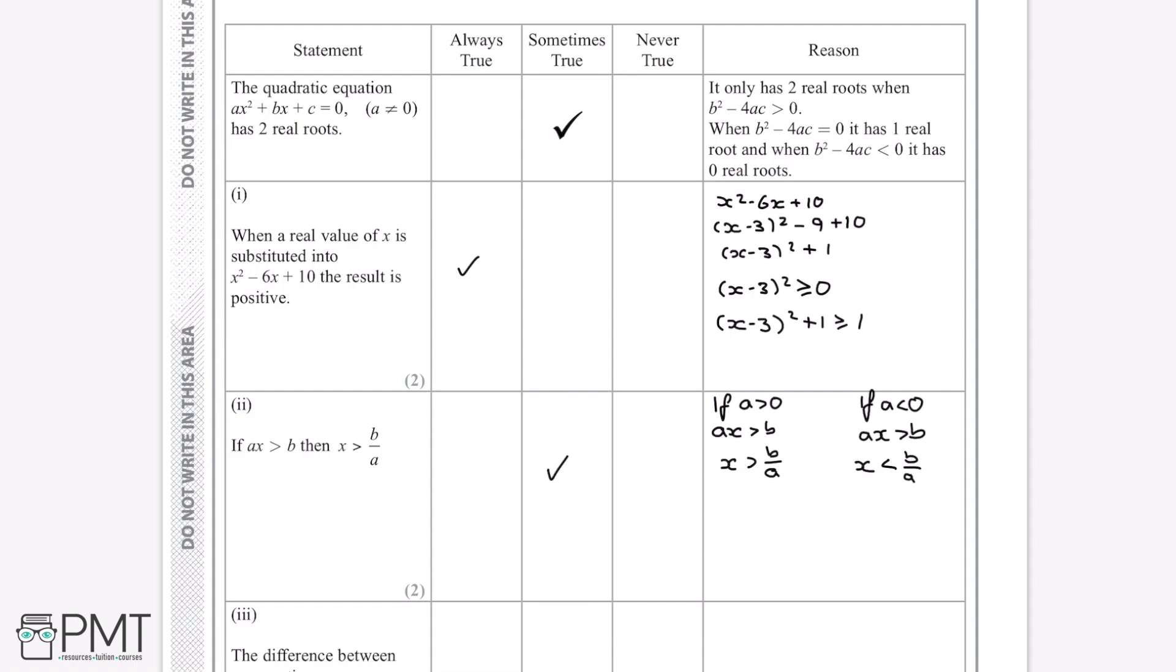And so we can say that this statement is only sometimes true, because if a is greater than 0, it is true. But when a becomes a negative number, the statement isn't true anymore, because the inequality symbol flips.